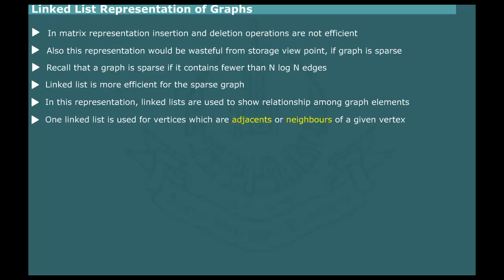Thus, in general, if there are n vertices, the list representation would consist of n Link Lists, one for each vertex.